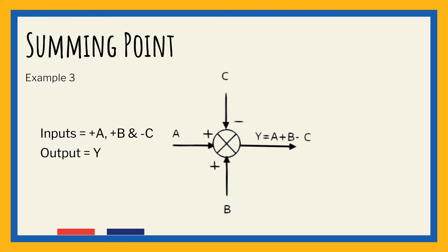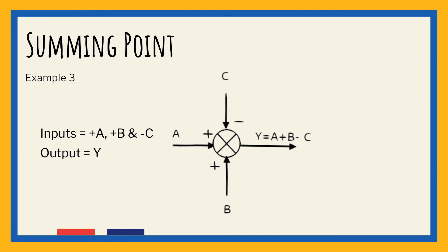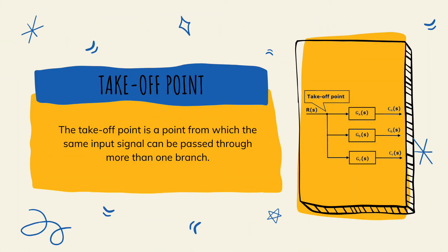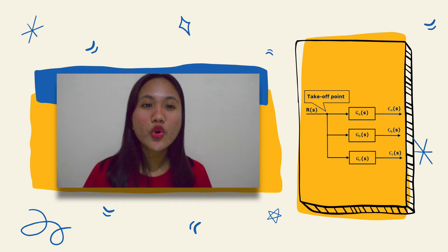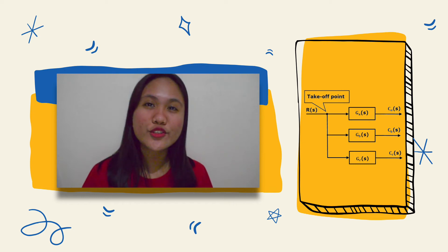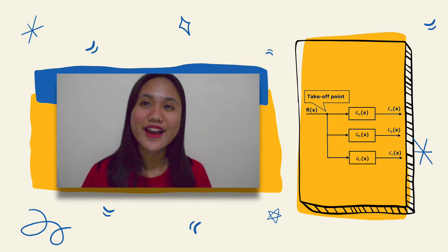The last basic element of a block diagram is a takeoff point. The takeoff point is a point from which the same input signal can be passed through more than one branch. That means, with the help of a takeoff point, we can apply the same input to one or more blocks or summing points. In this figure, the takeoff point is used to connect the same input R(s) to two or more blocks.